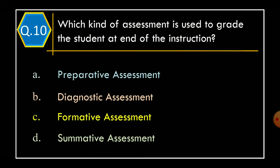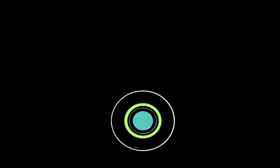Question 10: Which kind of assessment is used to grade the student at the end of instruction? Option A: Preparatory Assessment. Option B: Diagnostic Assessment. Option C: Formative Assessment. Option D: Summative Assessment. The correct option is Option D, Summative Assessment.